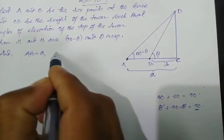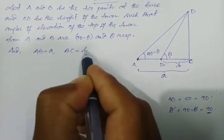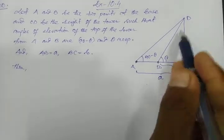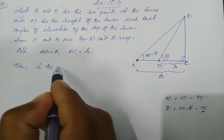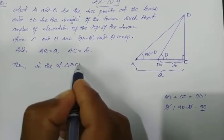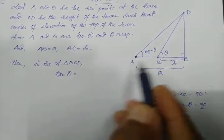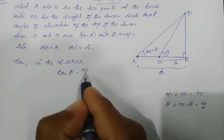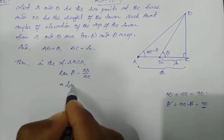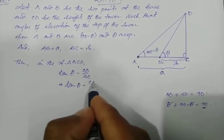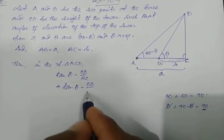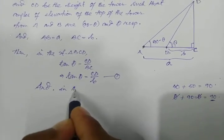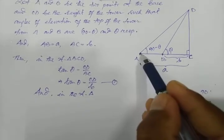Let us also note that AC, the distance of point A from the foot of the tower, is small letter a, and BC equals small letter b. Now let's first solve the right triangle BCD. In right triangle BCD, tan theta equals the perpendicular CD divided by the base BC, which equals CD divided by b. Let's call this equation 1.